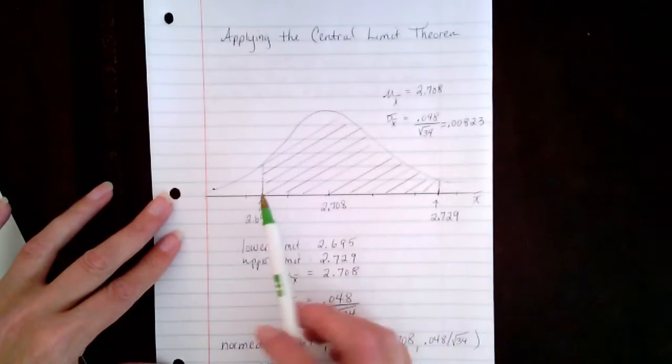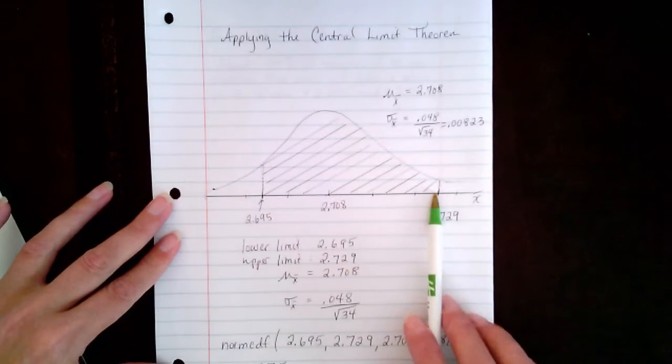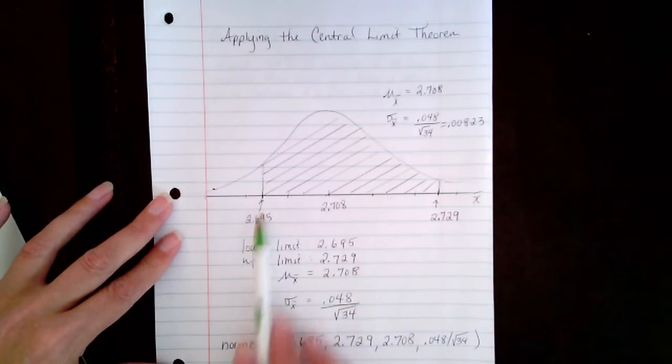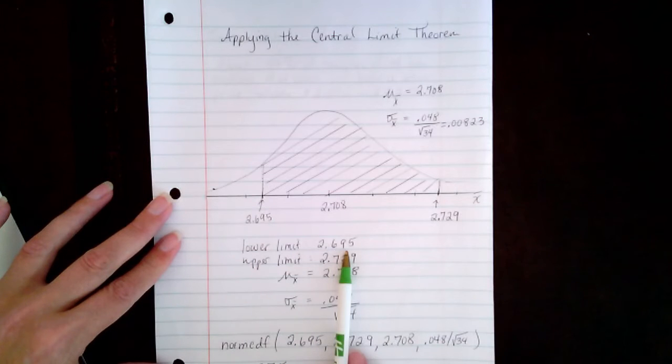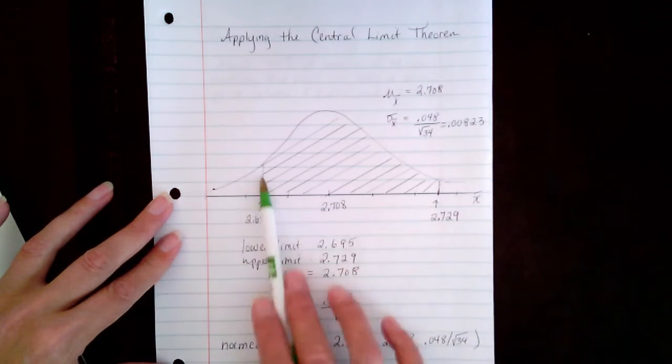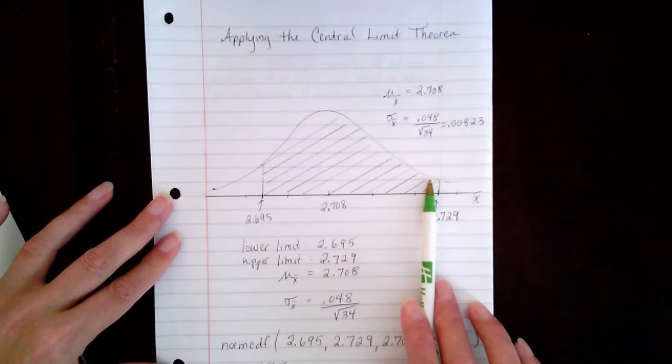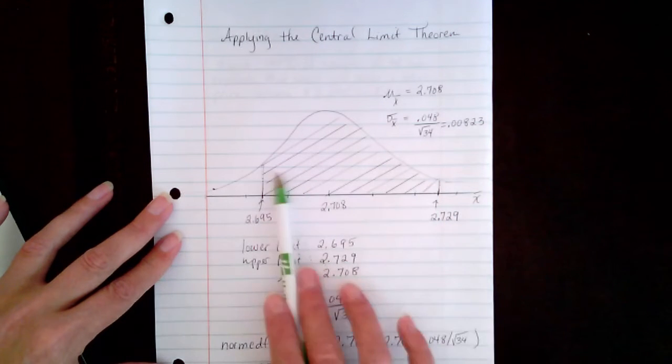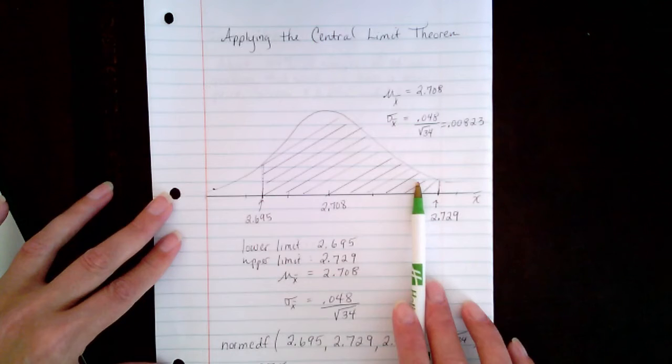So here I've drawn the picture of the area that we're interested in. The lower limit is 2.695, the upper limit is 2.729. So this is the area under the bell curve that we're interested in. This area represents this probability.